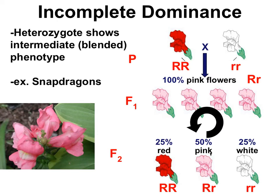Our first exception to Mendelian genetics is incomplete dominance. In incomplete dominance, the heterozygote individuals show an intermediate or blended phenotype. A classic example is snapdragon flower color. When parental red-flowered snapdragons are cross-pollinated with parental white-flowered snapdragons, the resulting F1s are all pink — neither red nor white are dominant. When the F1 generation self-pollinates, the resulting F2s have a 1 to 2 to 1 ratio of red, pink, and white flowered plants. The heterozygote pink is a blend of red and white.